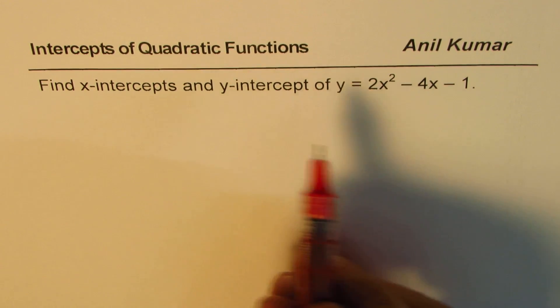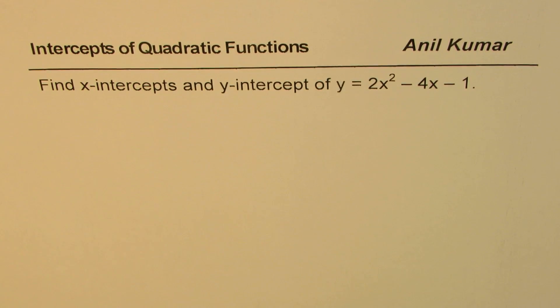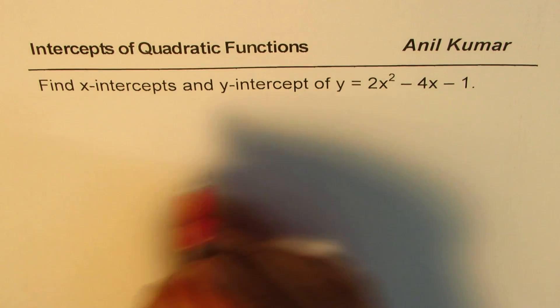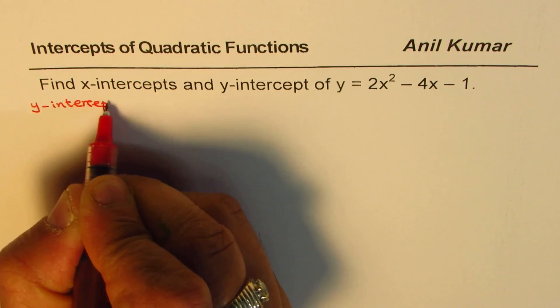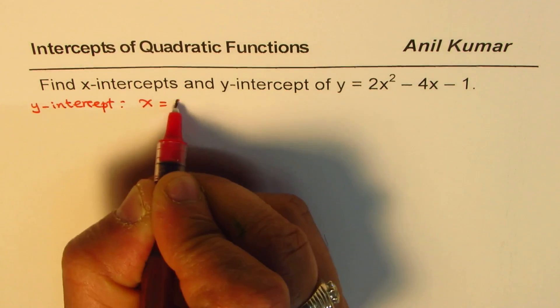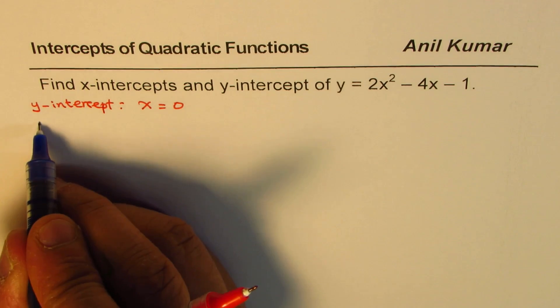The question is find x-intercepts and y-intercepts of y equals 2x squared minus 4x minus 1. So let's begin by finding y-intercept. So y-intercept is when x is equal to 0. So basically we have to substitute x as 0 in this equation.